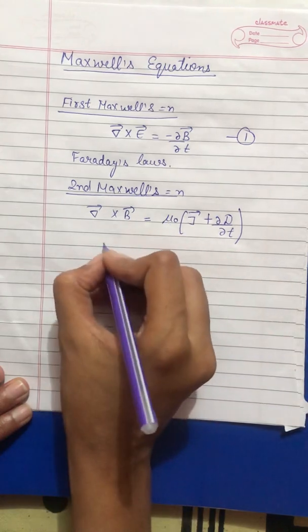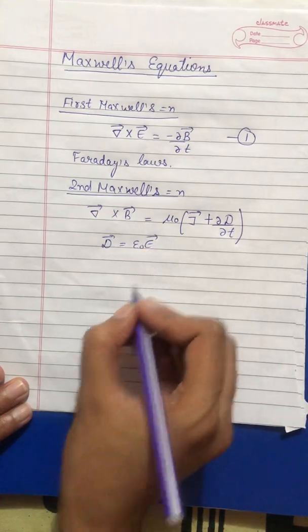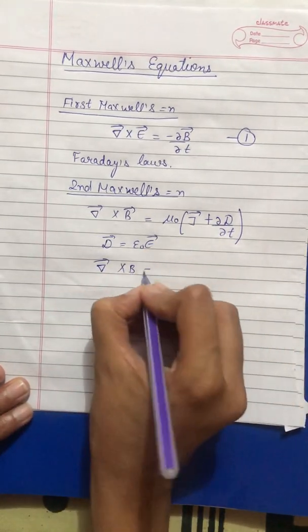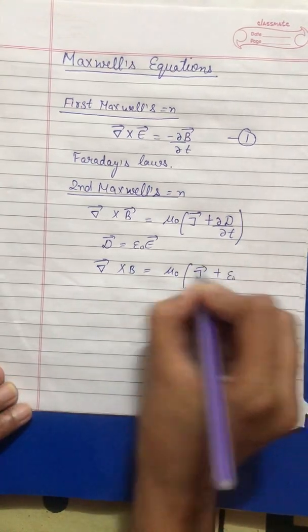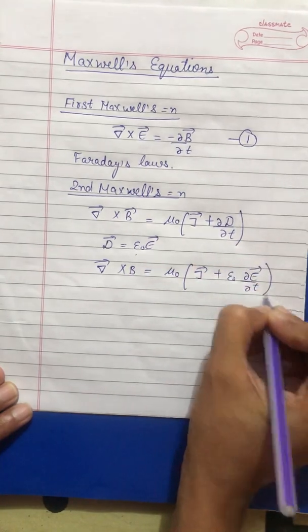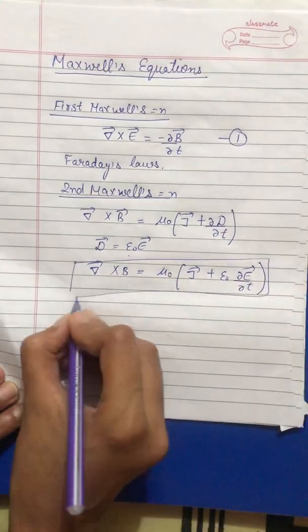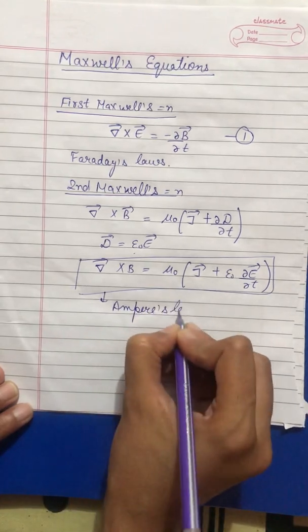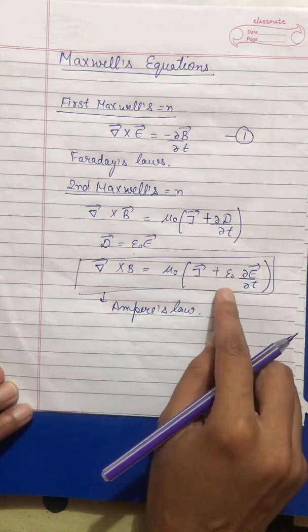And we know D's value - D is equals to epsilon naught E from Maxwell equations. So, del cross B becomes mu naught J plus epsilon naught is constant, so curly E by curly T. This is called Ampere's law, modified Ampere's law. And this equation is true for both steady as well as varying current.